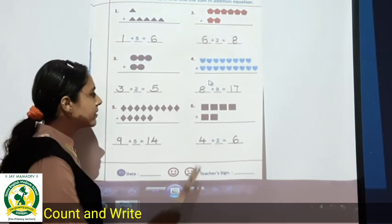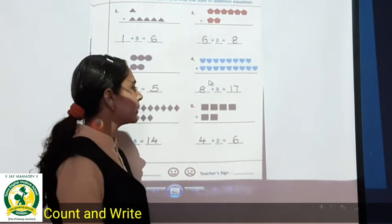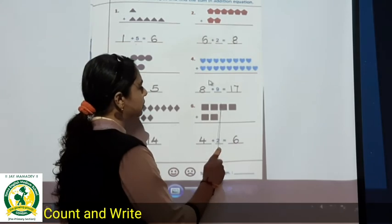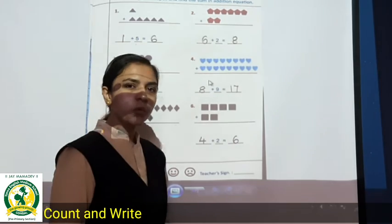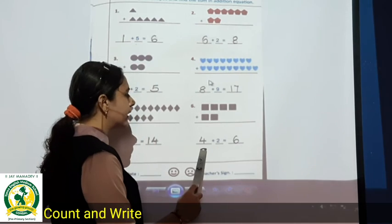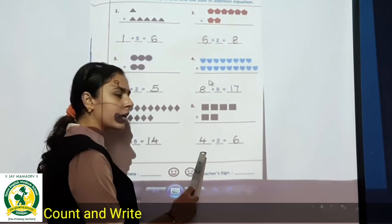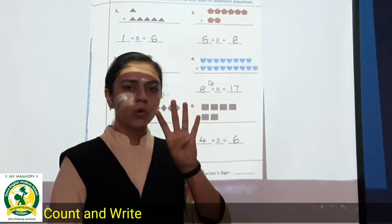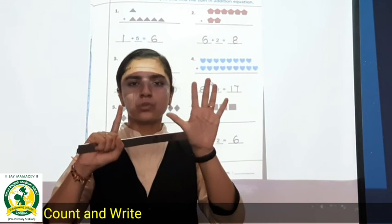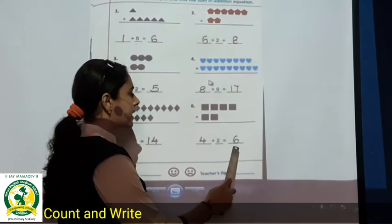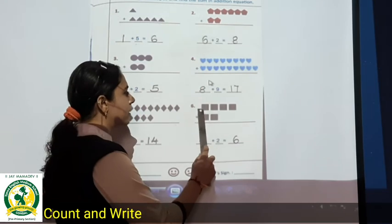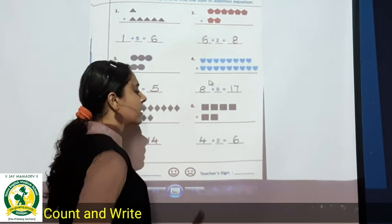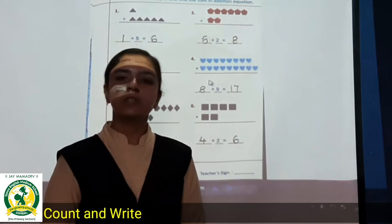Now the last: squares. In the first line, one, two, three and four. Four squares are there. So we will write here four. Four plus two. So how many total? Six. One, two, three, four, five, six. So four plus two is equal to six.